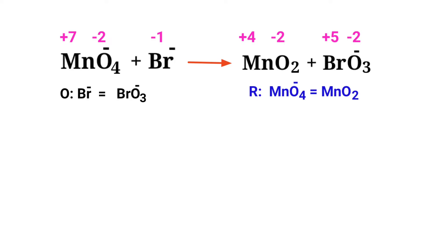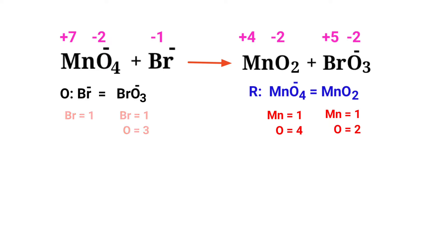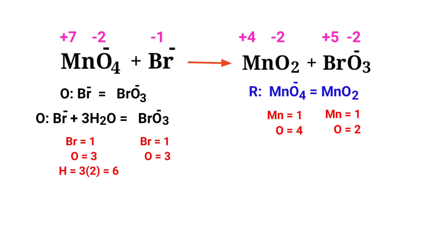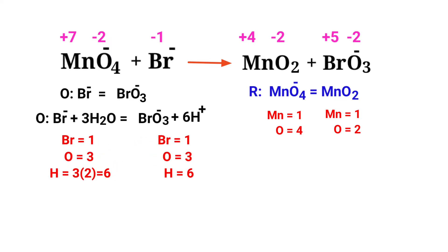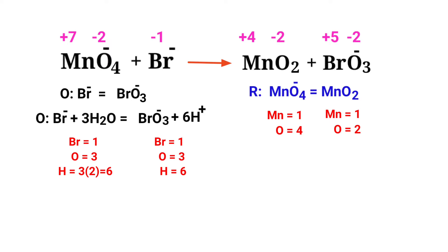Now balance the number of atoms in the two half reactions. In the oxidation half reaction, to balance the oxygen atoms you produce water molecules. The oxygen atoms are now balanced. To balance the hydrogen atoms, you produce H⁺ ions. The number of atoms are now balanced in the oxidation half reaction.